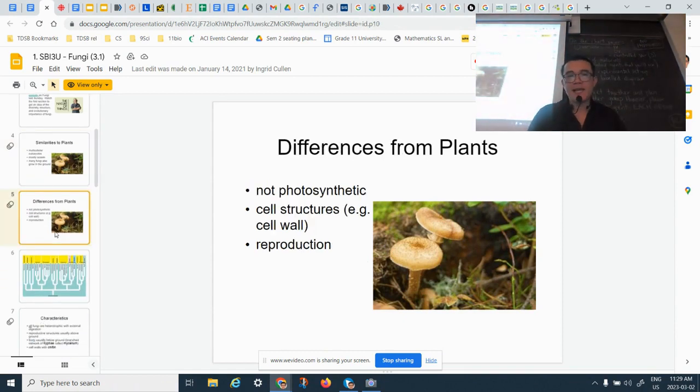However, things are different from plants. They cannot make their own food - they are not photosynthetic. Also, anyone remember what is the material of fungi cell wall? Chitin, yes. And the method of reproduction is also different from plants.